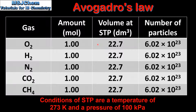Under conditions of STP, which is 22.7 cubic decimetres. If we look at the right column we can see that one mole of each gas contains the same number of particles, which is 6.02 times 10 to the power of 23. So from this table we can see that equal volumes of any gas at the same temperature and pressure have the same number of particles, which is Avogadro's law.